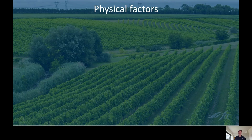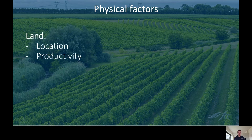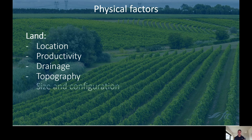As for the property itself, there are many physical factors that come into play. When looking at the land, location and productivity are two major elements. Other examples include drainage, topography, size and configuration, and accessibility.